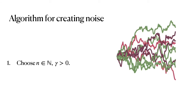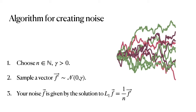This gives us an algorithm for creating noise. Choose n (the number of approximation points) and a standard deviation, then sample a vector of size n from a normal distribution with that standard deviation. Your noise function — or its discrete approximation — is given by the solution to the system: L₁ times f equals h (which is 1/n) times that vector of normal noise.